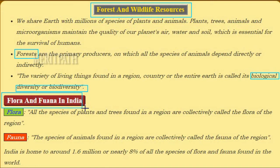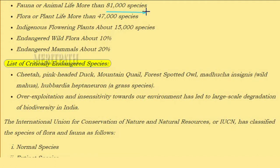Let's learn about flora and fauna in India. All species of plants and trees found in a region are collectively called the flora of that region, while animal species are called fauna. India is home to around 1.6 million species — nearly eight percent of all species on earth. India has 81,000 species of fauna, 47,000 species of flora, and 15,000 species of indigenous flowering plants. Endangered wild flora constitute about 10 percent and endangered mammals about 20 percent.